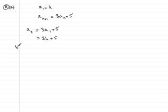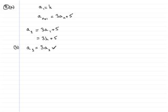For part B, we've got to show that A3, the third term in the sequence, is 9k plus 20. We already have the second term, so to get the third term I need to go back to the formula and substitute n equals 2, so that we get A2+1, which is A3. So A3 will equal 3 lots of A2 plus 5. But we know that A2 from part A is 3k plus 5, so that's going to equal 3 lots of (3k + 5).